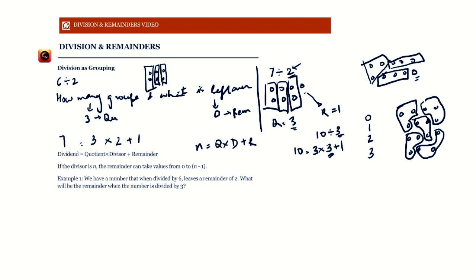Only when I cannot make any more groups of the divisor's size do I stop and count what's left. I could have zero marbles left, one marble, or two marbles. The moment I have three extra marbles I make a new group, and the quotient increases by one. So the remainder cannot be equal to or greater than the divisor — the remainder always ranges from 0 to n minus 1.